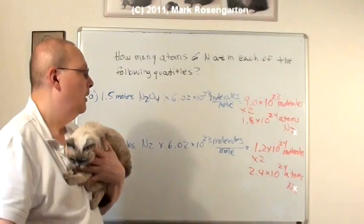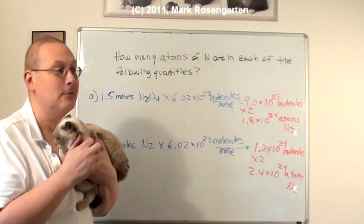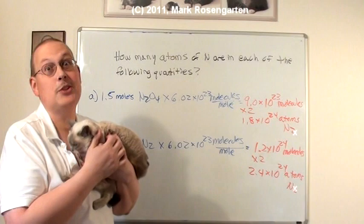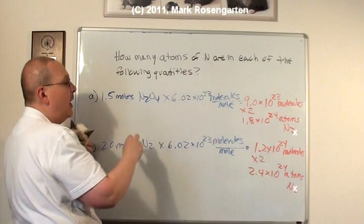So when you're solving a problem like this, if they ask you how many molecules you have, well that's simple. Just multiply by 6.02 times 10 to the 23rd. That's how many molecules there are in a mole. But molecules are made up of atoms. And there are 2 atoms of nitrogen for every molecule.